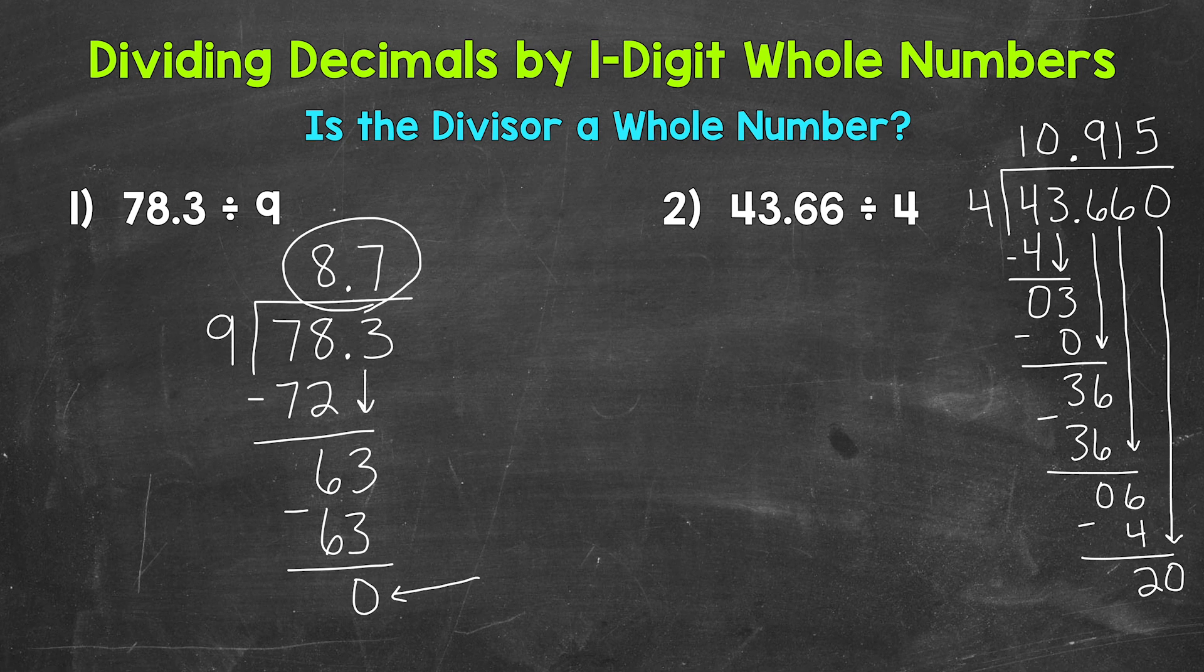Multiply. 5 times 4 is 20. Subtract. And we get that clean cut 0. Our final answer. 10.915.